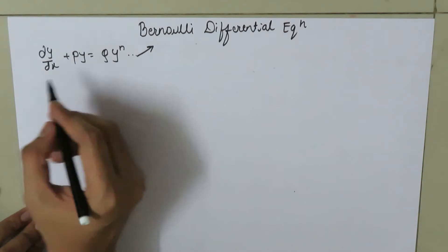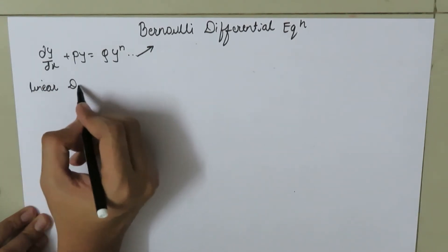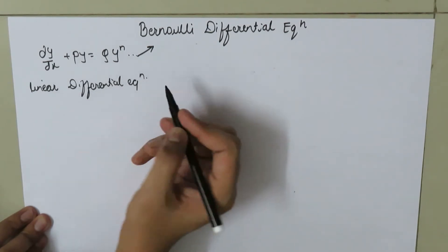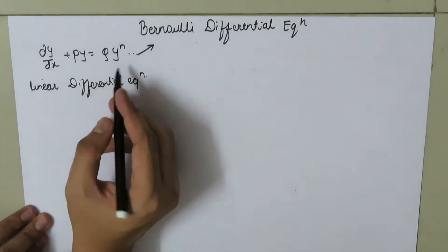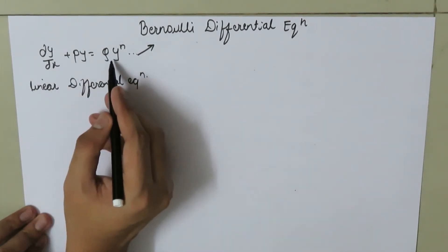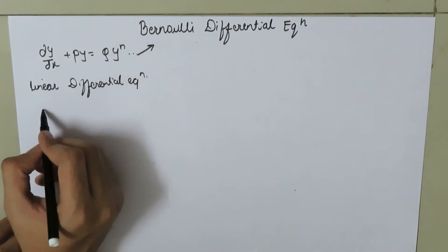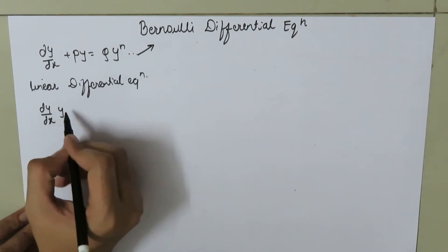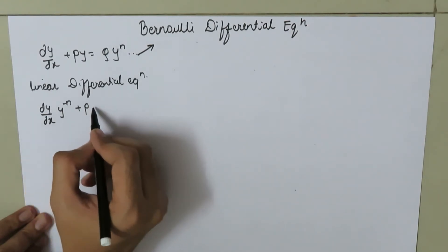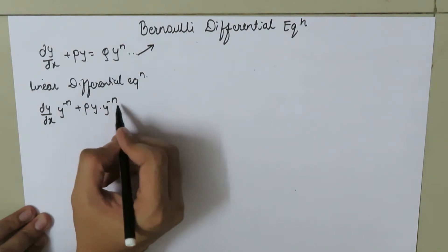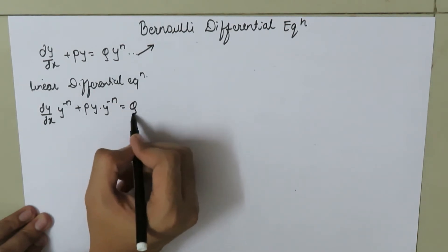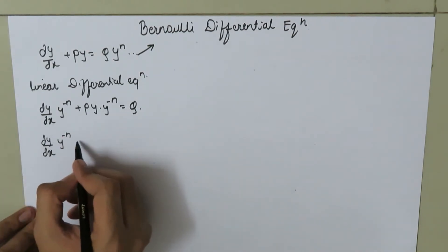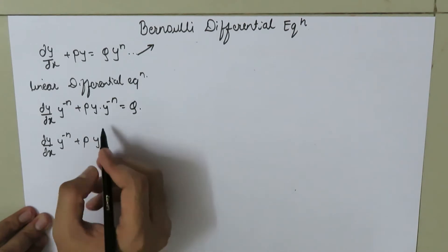In this type of equation we need to convert it into a linear differential equation. To do this, we divide the whole equation by y to the power n to make the coefficient of q equal to unity. So we get dy/dx times y to the power negative n plus p times y to the power 1 minus n equals q.